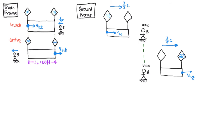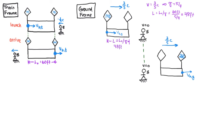We also have to account for length contraction — this train is not 60 feet long in the ground frame. It's a contracted length L equal to L0 over gamma. As a reminder, for V equal to three-fifths c, we have gamma equal to five-fourths. So L is 60 feet divided by five-fourths: 60 over 5 is 12, and 12 times 4 is 48. The train is 48 feet long in the ground frame.